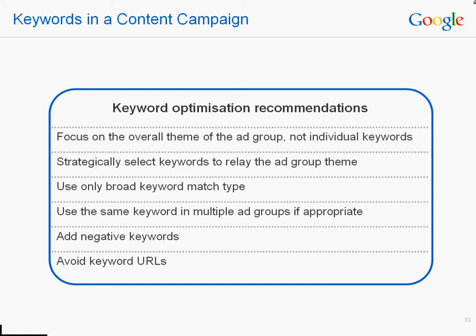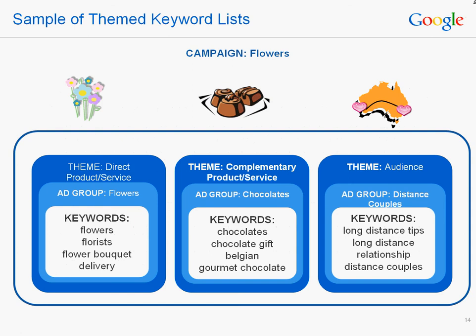For content campaigns, it's best to use the URL that is most relevant to the ad. In terms of the number of keywords to build a theme, we recommend no more than 20 to 30 keywords per ad group. Here's how we would structure content ad groups for our flower retailer: the first group contains keywords relating to flowers, the second has keywords relating to chocolates, and the third has keywords relating to couples in long-distance relationships. You could use the keyword tool in your AdWords account to get ideas for keywords around these themes.